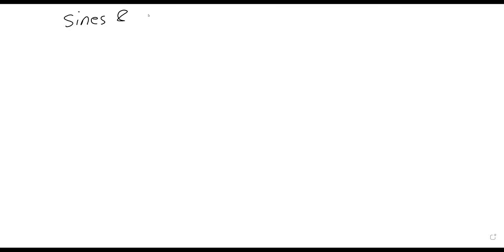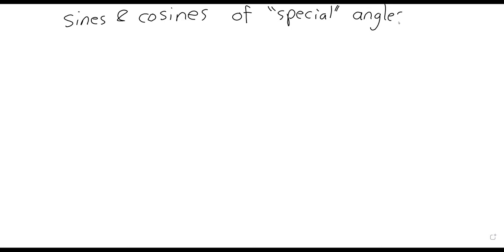Although I've expressed some ambivalence about how important this is, we can talk about the sines and cosines of special angles — those being pi over 3, pi over 6, and pi over 4. Just to keep this from being total repetition, we can show where the sines and cosines come from, because I don't think we've given that information before.